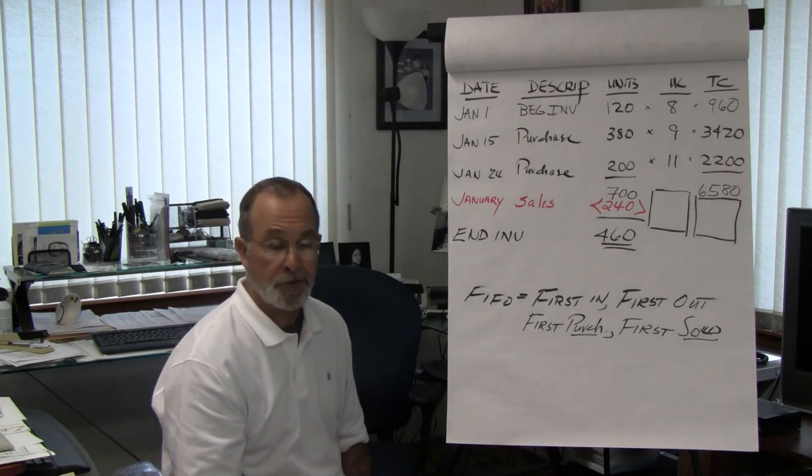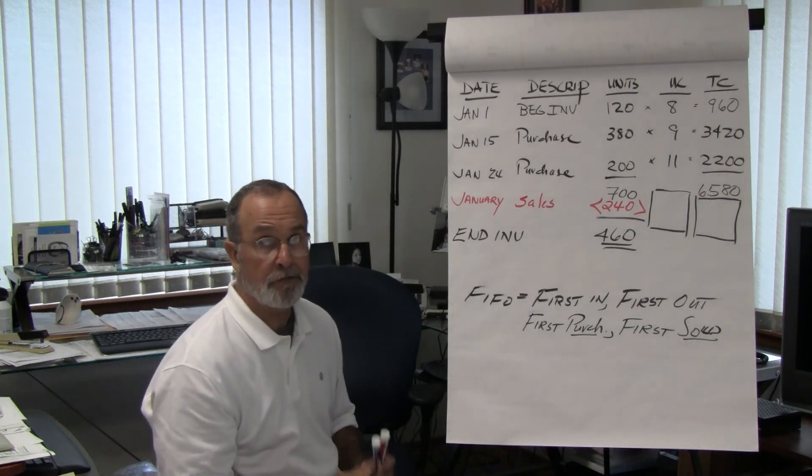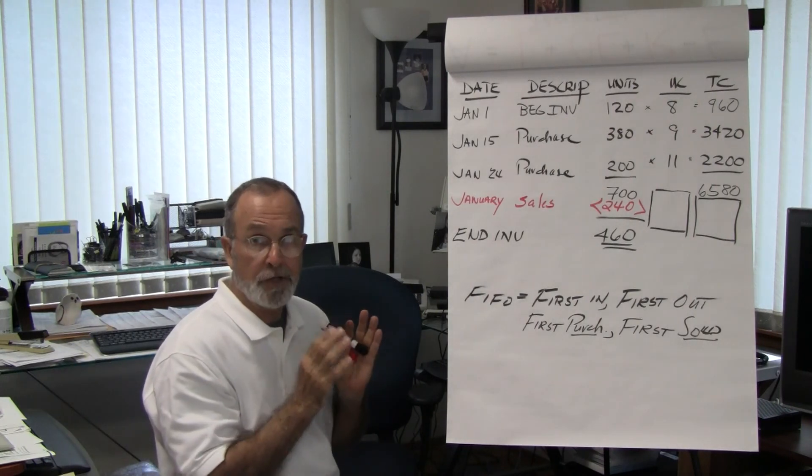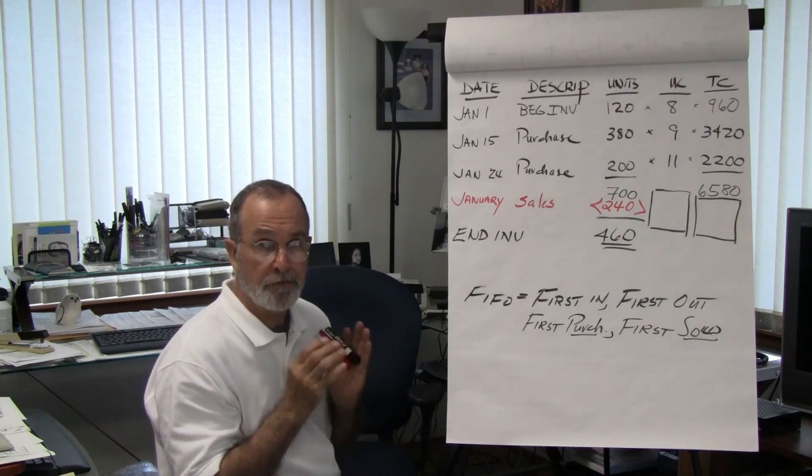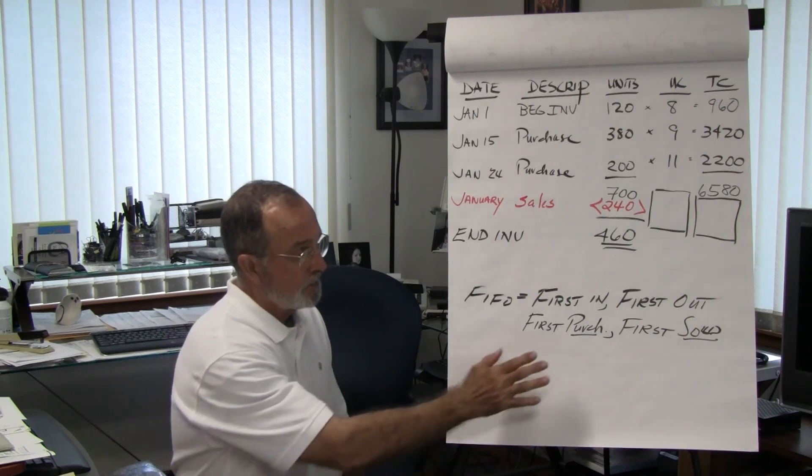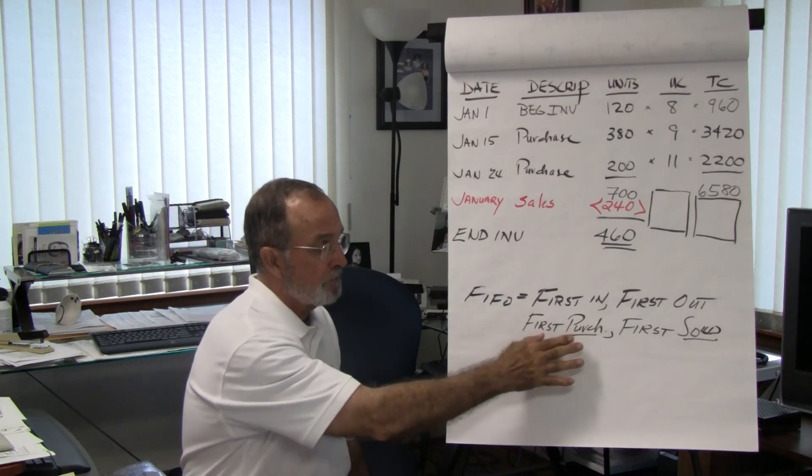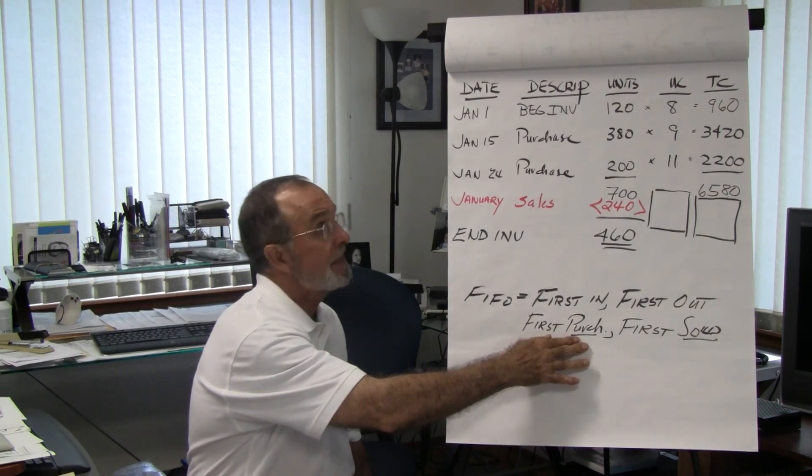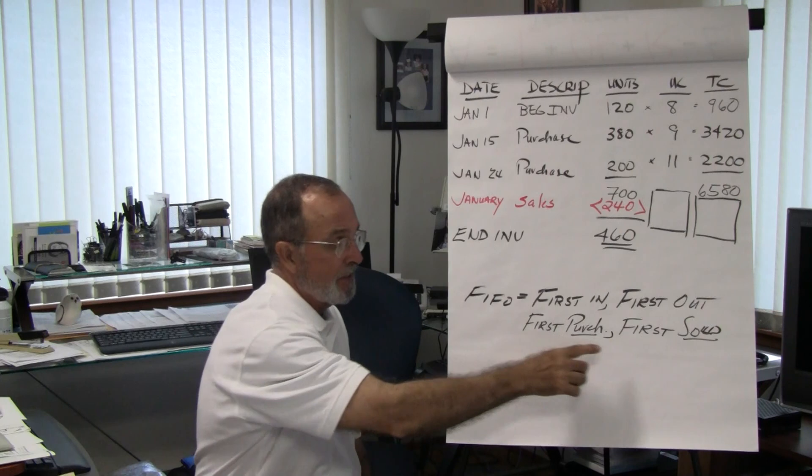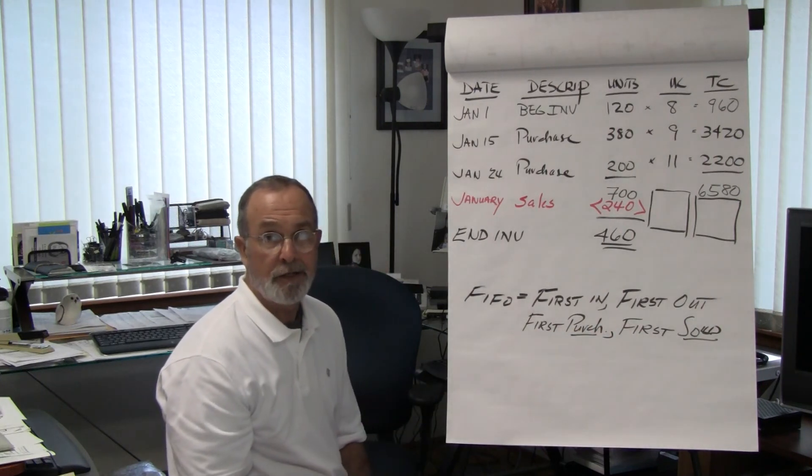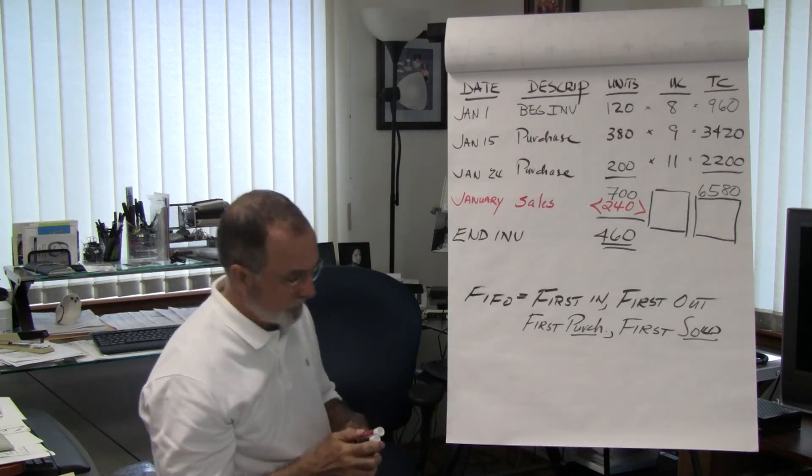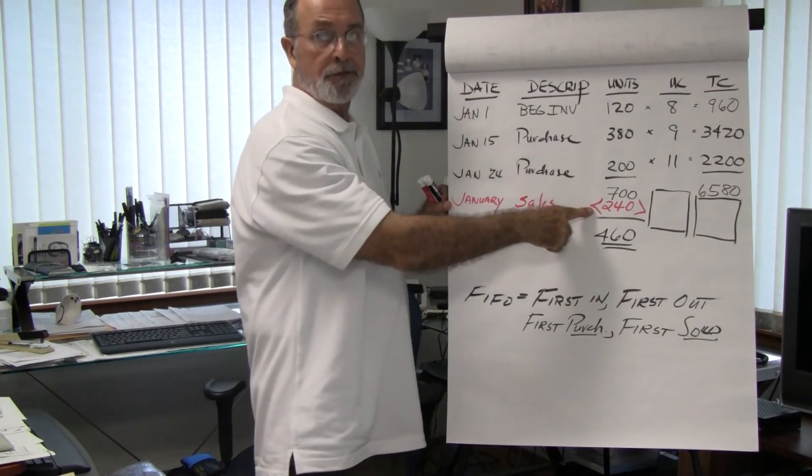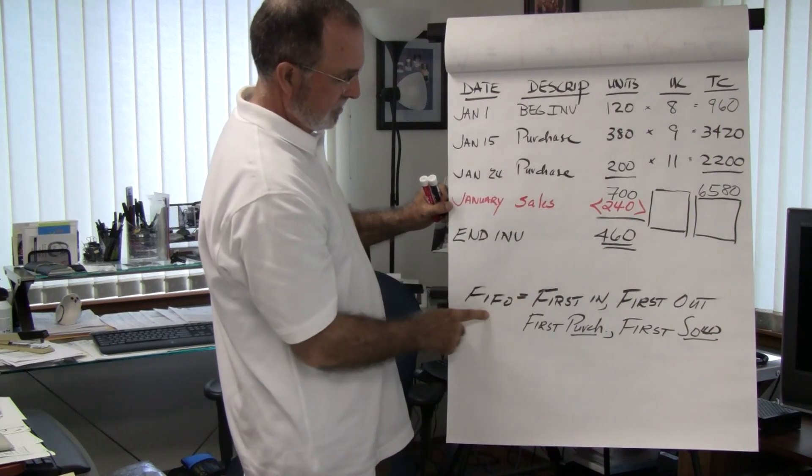And again, it's an assumption. We can sell inventory out of our inventory stock any way we want to. But for accounting purposes, if we're using the first in, first out cost flow assumption, then this is what we're saying: the first, the earliest inventory that we have on hand, including our beginning inventory, is the first inventory that we have sold.